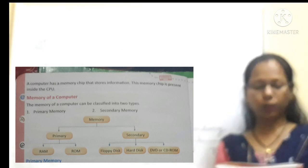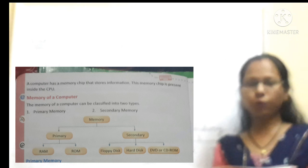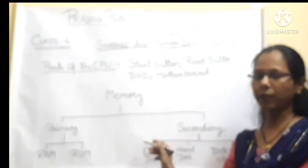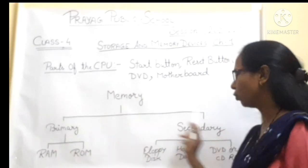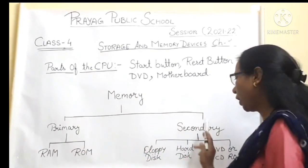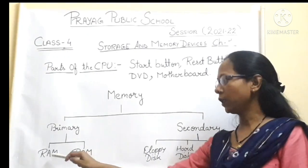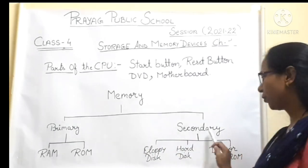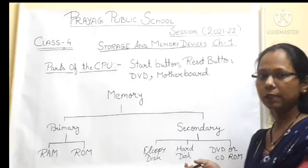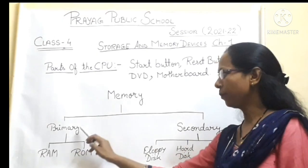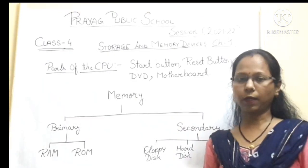Memory of a computer can be classified into two types: primary memory and secondary memory. Primary memory is again divided into two parts — RAM and ROM. Secondary memory includes floppy disk, hard disk, and DVD/CD ROM. Primary memory जो आपकी internally implant होती है, और secondary memory जिसको आप अलग से use करते हैं.